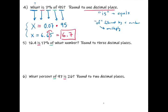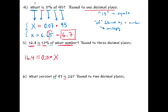For numbers five and six, I'll use the equation method we used for number four. Number five: '16.4 is 17 percent of what number?' We have the word 'is' and the word 'of' followed by a number. So: 16.4 is 17 percent — convert to decimal: 0.17 — of what number, which is the unknown x. The equation is: 16.4 = 0.17 × x.